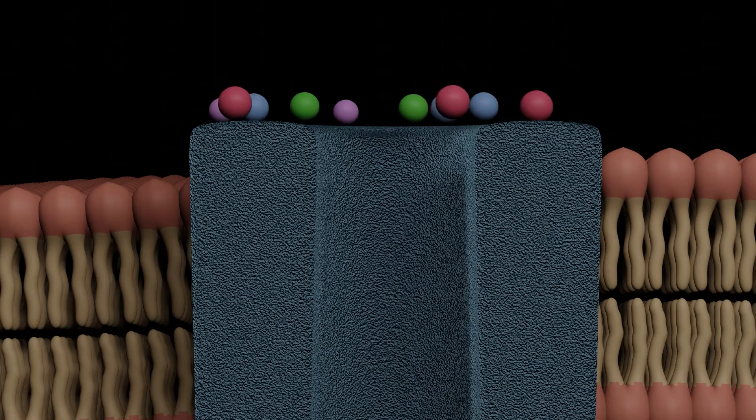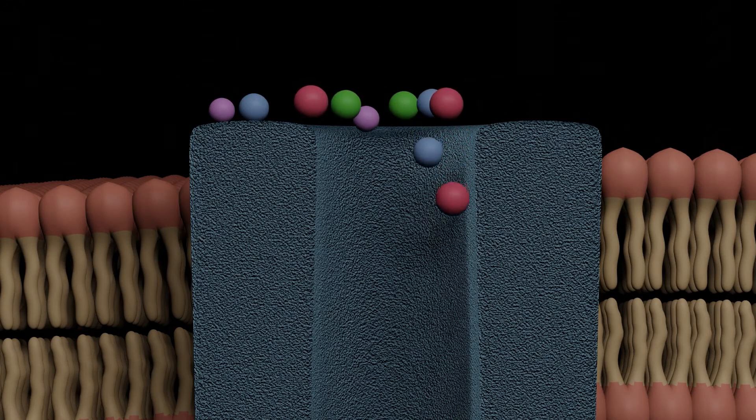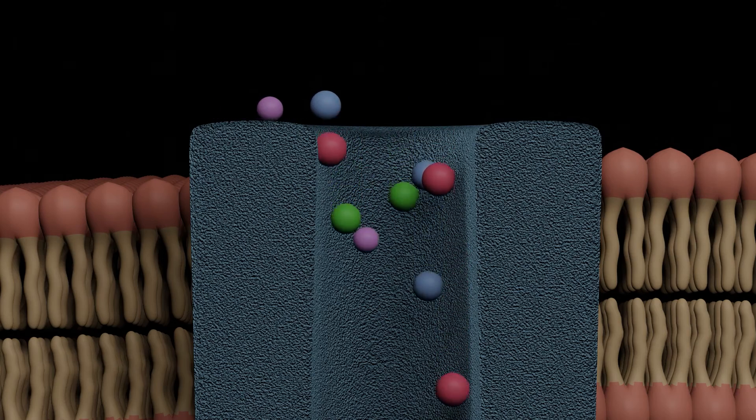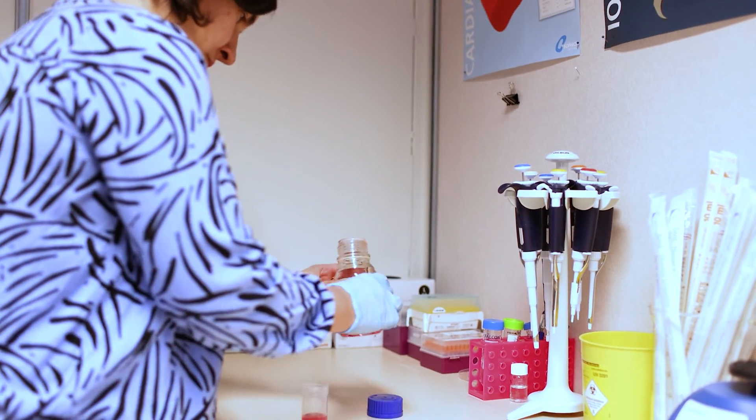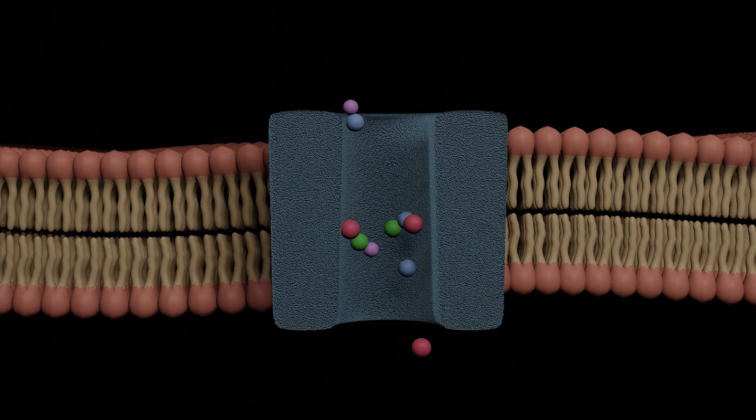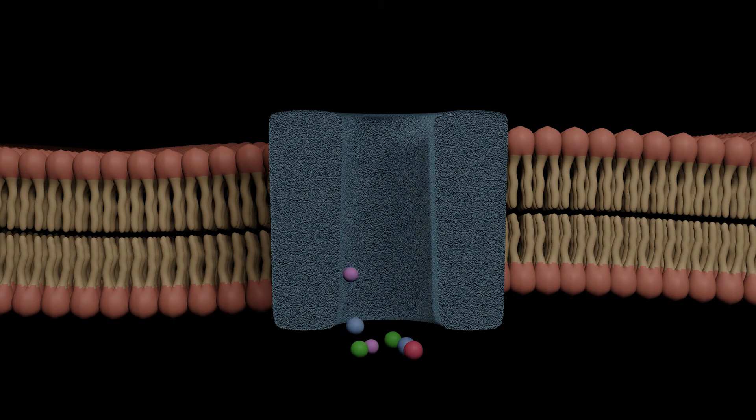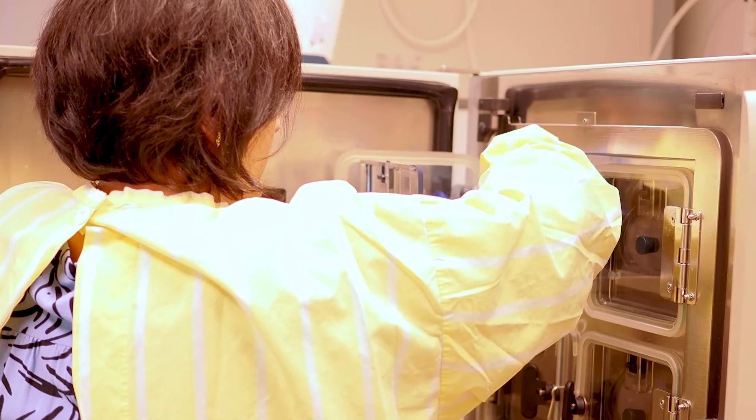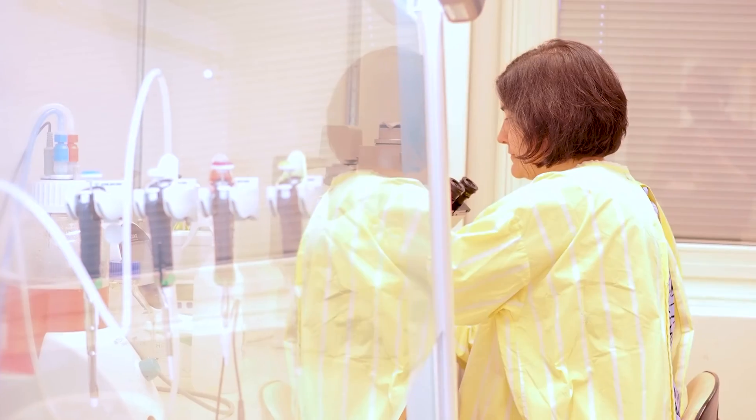Ion channels are proteins in the membranes, so in the cell membrane that surrounds the cell. Then you will have a lot of different types of ion channels. These ion channels, they can be opened or closed depending on different settings. For example, depending on the voltage across the membrane, they can be opened or closed. And when they are open, you can record a current across the membrane. And these ion channels, they have very important functions in our bodies, for example to make our heart beat and also for our brain to work.